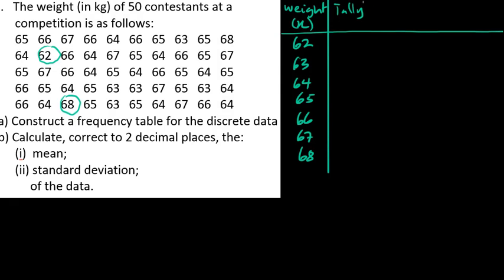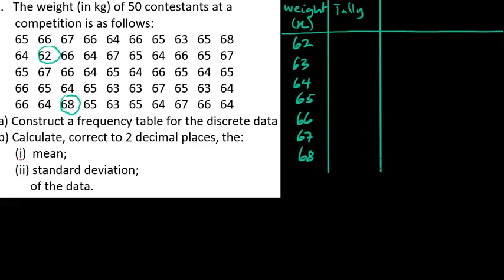Now for the tally: checking the data, we have just one 62, so I put one there. We have five 63s. For 64 we have 12, and for 65 we have 14.